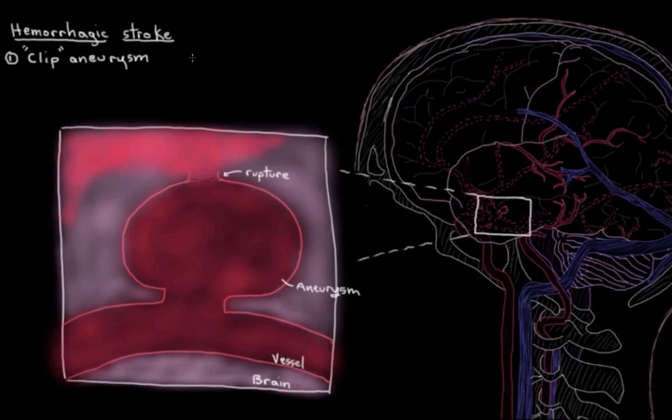Well one way to fix that is for the surgeon to place a clip that kind of looks like this thing here. Like it's a metal clip that then gets clamped onto the base of the aneurysm. So now that clip has blocked blood from coming through here and spilling out. So now blood can just continue along its merry way. So that's one way to treat a hemorrhagic stroke with these clips.